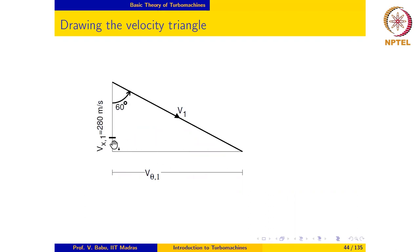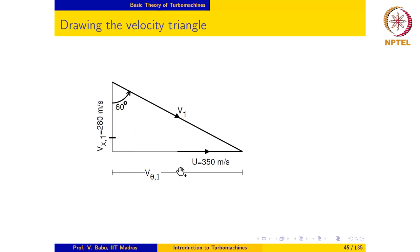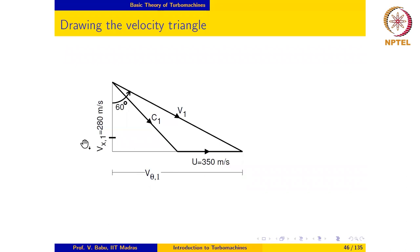This diagram is not to scale but qualitatively accurate. The blade speed is also given, so we can draw the blade velocity vector. Blade speed is given to be 350 meters per second, and it is in the same direction as v_theta1 — that is the basis for this choice of direction for the blade speed. The relative velocity vector at inlet points from here to here, and we complete the inlet velocity triangle.